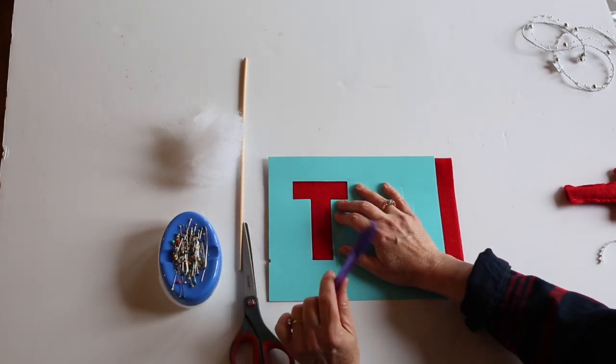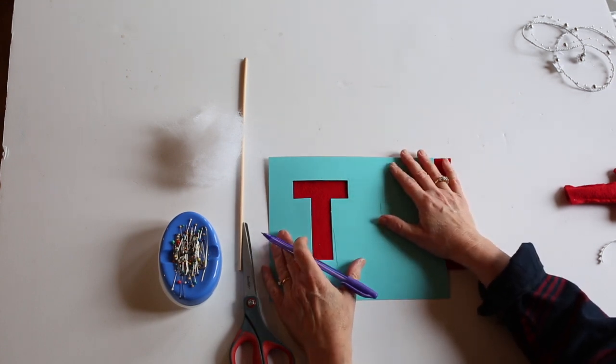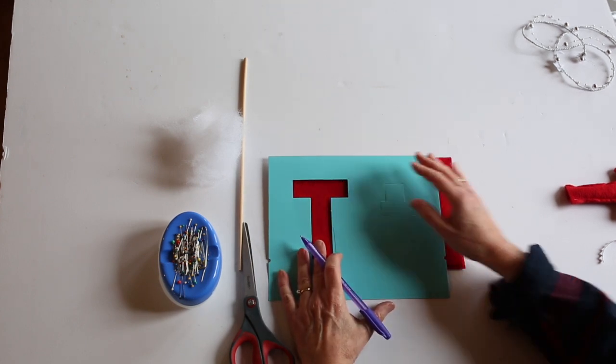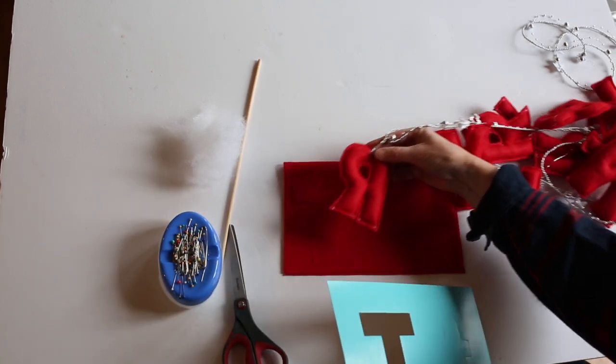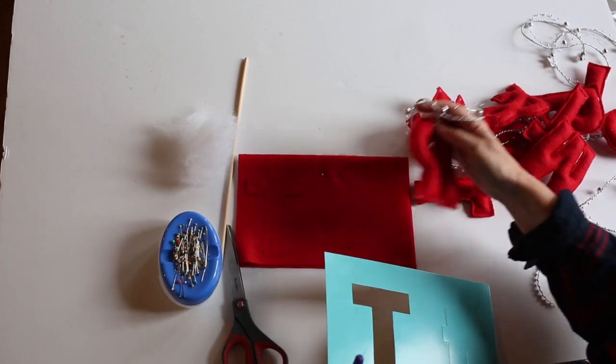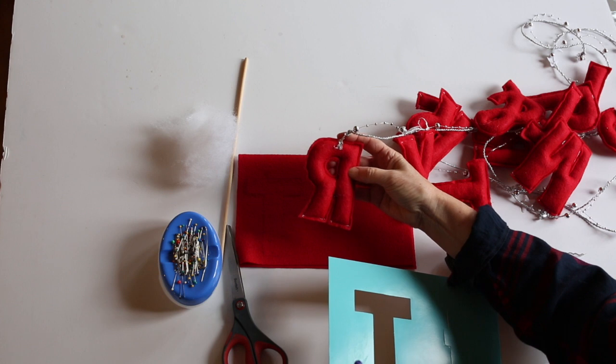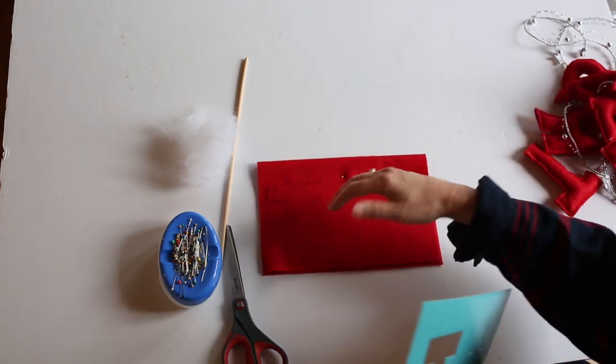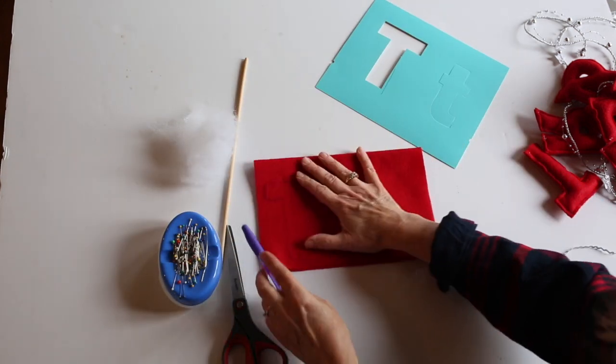But let me tell you the trick, it doesn't show on this, but on all the other letters that are reversed like an R, you would need to trace it this way, backwards, because you don't want the ink pen to show on the front. It'll be on the back where nobody will see it. So did you get what I meant? You trace the letter upside down. It's just that it doesn't show on the T.